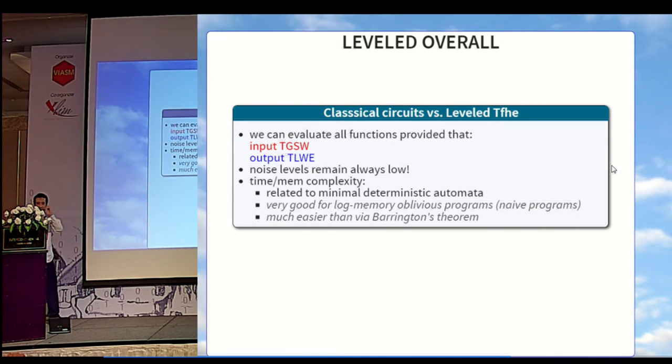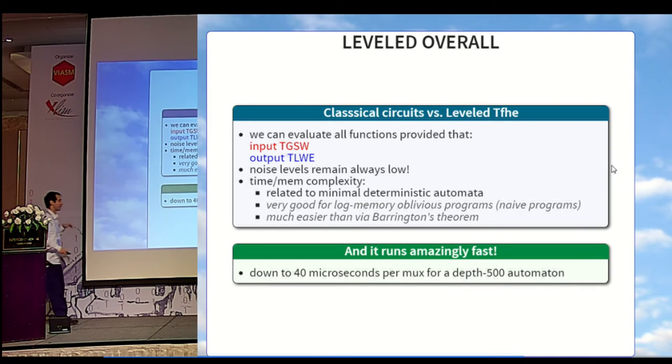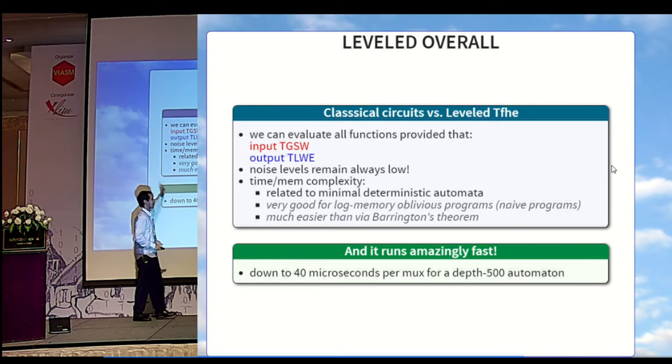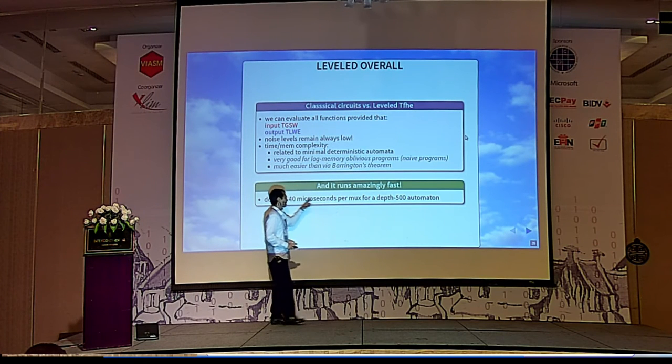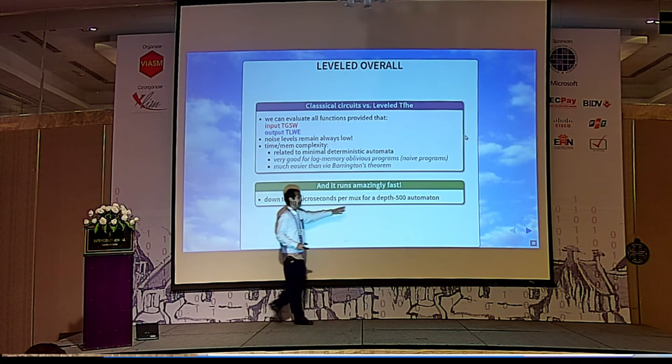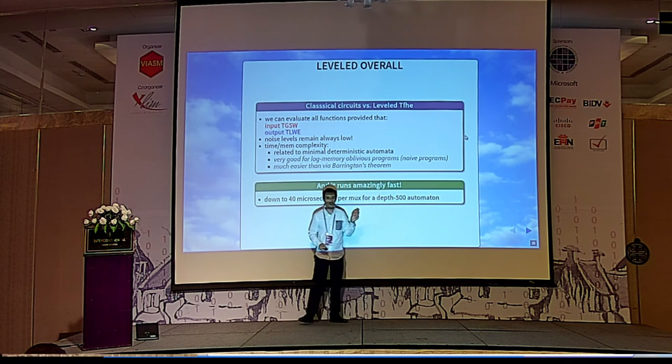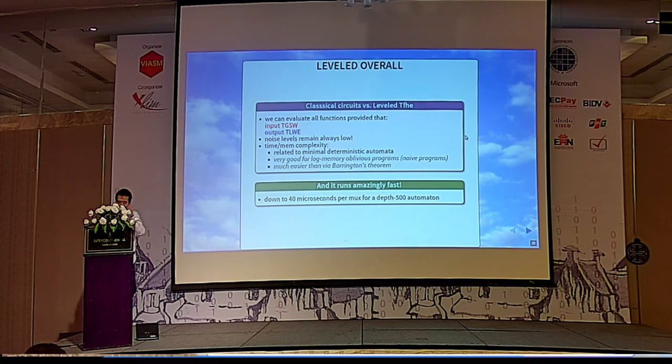Overall, with leveled homomorphic encryption, we can evaluate any function provided that the inputs are GSW ciphertext and the outputs are LW ciphertext. The noise levels will remain always low, and the time-memory complexity will now be related to the size of the minimal deterministic automata, which is usually intrinsic and which is very good when you have a naive program that solves your problem. And one last important thing. When we combine rings plus automata plus everything, one mux gate can be evaluated in less than 40 microseconds for, for example, the DEF 500 automaton, which corresponds to the LWE decryption, which is really fast.